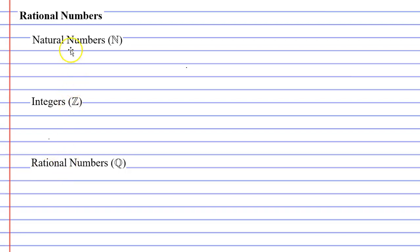In this video, we're going to talk about three sets of numbers: the natural numbers, the integers, and the rational numbers. So we'll start with the natural numbers. Now they're actually known by another name — they're also known as the counting numbers, and there's a really good reason for that.